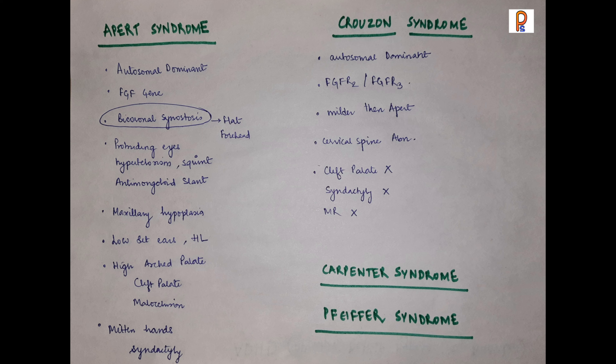Other than Apert and Crouzon, there are other syndromes associated with craniosynostosis, such as Carpenter syndrome, FGFR-related syndromes, and all other syndromes which are associated with craniosynostosis. Thank you.